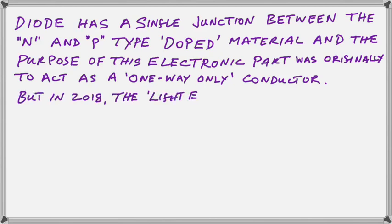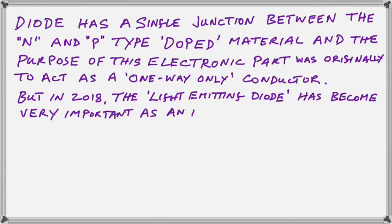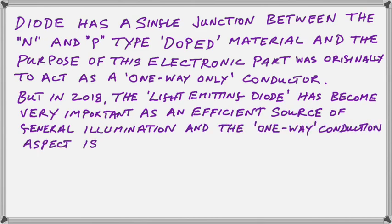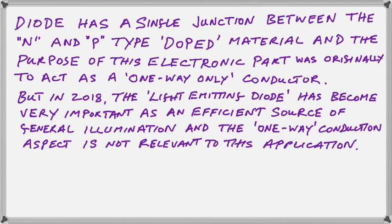However, in 2018, with all the focus on renewable energy and energy reduction, the light emitting diode has become very important as an efficient source of general illumination. Therefore, this one-way conduction aspect is not relevant in this particular application. When the diodes are being used to replace normal incandescent and fluorescent bulbs, they're not being strictly used in the diode way. They may have diode properties, but they're not serving the diode function in electronic circuits.